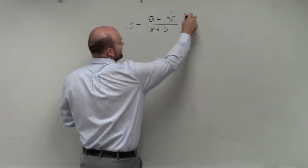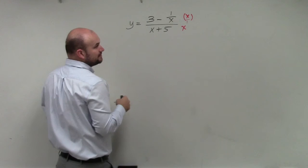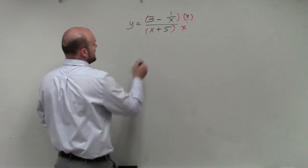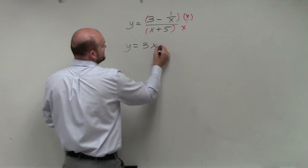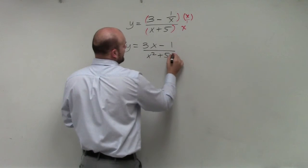So what I can do is multiply the top and the bottom by x. You can really think of that as x over 1. And so what happens is now we obtain an equation y equals 3x minus 1 over x squared plus 5x.